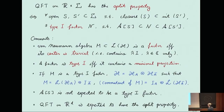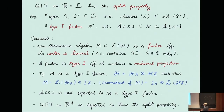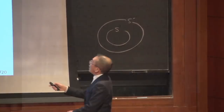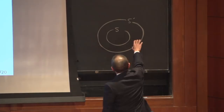A nice thing about a type 1 factor is that it is realized on a Hilbert space as a set of linear operators, and moreover the original Hilbert space splits as a tensor product. The type 1 factor is realized as linear operators on the first part, and its commutant as operators on the second part. What splitability is saying is that even though the algebra A(S) itself is not type 1, if you thicken the region a little bit, you can find an algebra realized in this way.